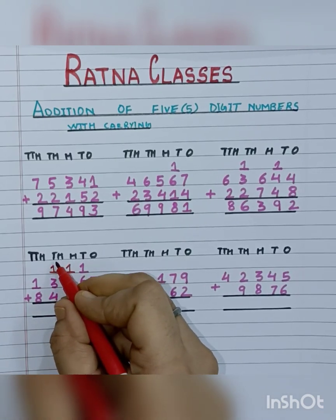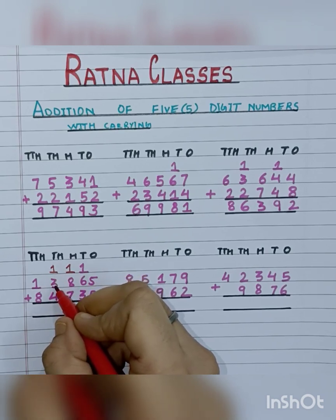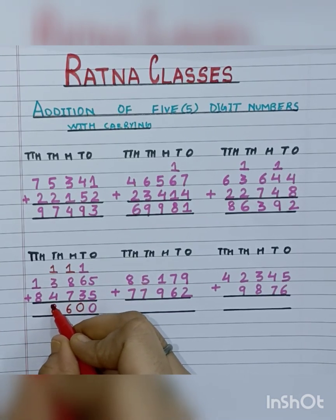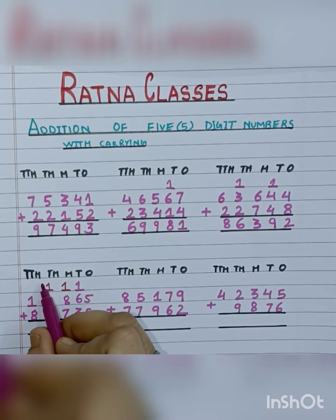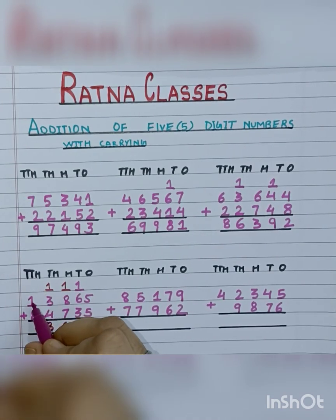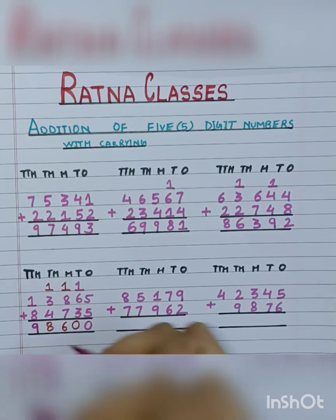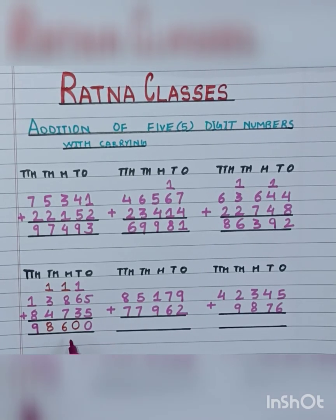Now add the thousands place digits: 1 carry plus 3 is 4, and 4 plus 4 is 8. Now we will add the ten-thousands place digits: 1 plus 8 is 9. So our answer is 98,600.